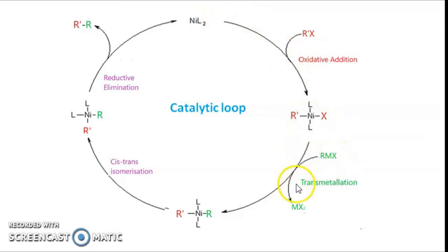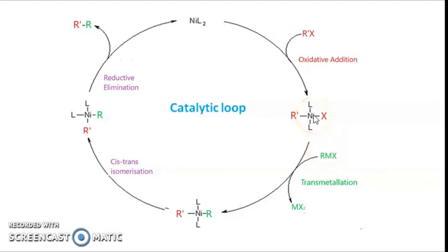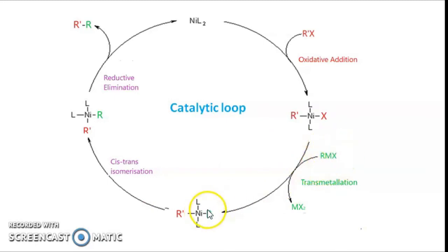In the transmetallation step, the alkyl group, aryl group, or organic moiety which is attached to the metal is transferred to the nickel or palladium transition metal. The R group from the organometallic compound is transferred to the transition metal catalyst.